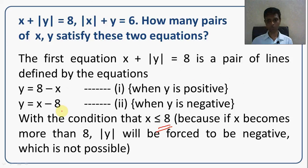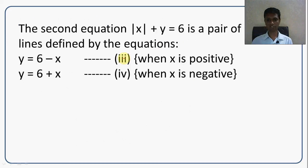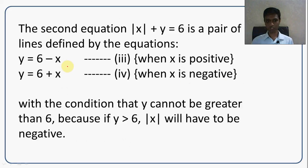Now for the second equation, mod x plus y equals 6: this becomes y equals 6 minus x when x is positive, and y equals 6 plus x when x is negative. Again, since mod x is always non-negative, the entire equation is defined only when y is less than or equal to 6. The moment y becomes greater than 6, mod x would have to be negative, which is impossible.